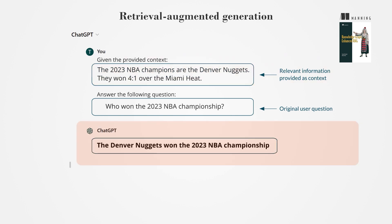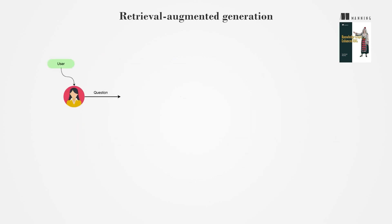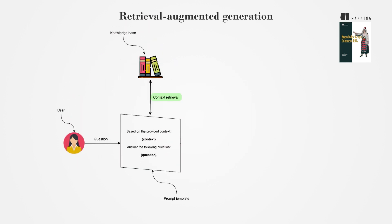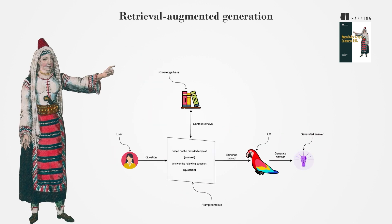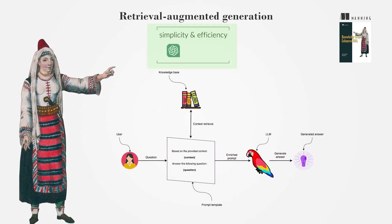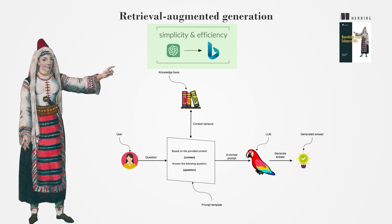The RAG workflow empowers LLMs to generate accurate answers. After a user asks a question, the system retrieves relevant information from a knowledge base. This enriched context is then fed to a large language model trained for question answering, enabling it to provide a more comprehensive response. The RAG approach is popular due to its simplicity and efficiency, and is also part of the ChatGPT interface, where the LLM can use Bing search to find relevant information before generating the final answer.